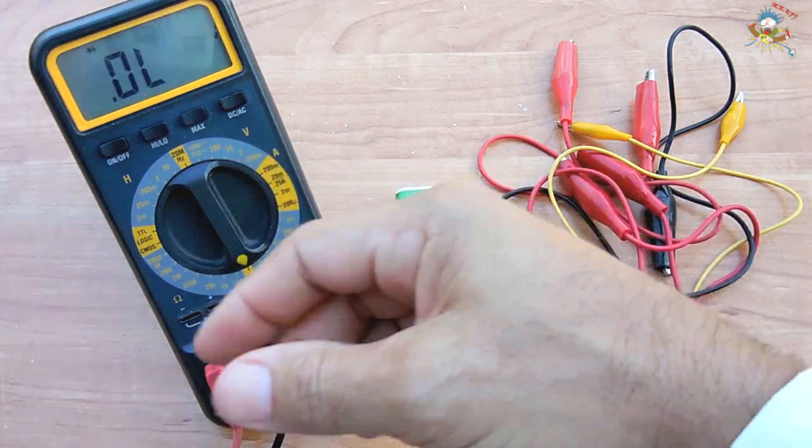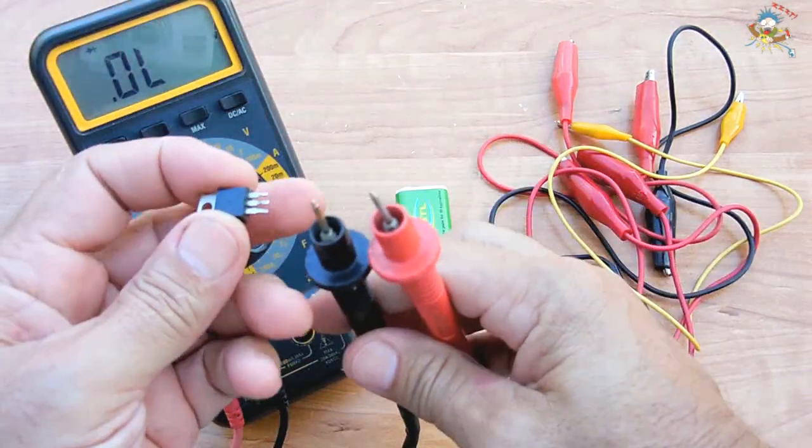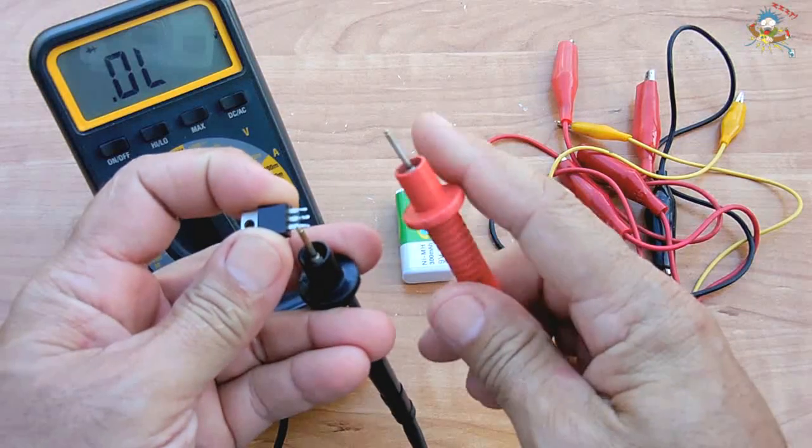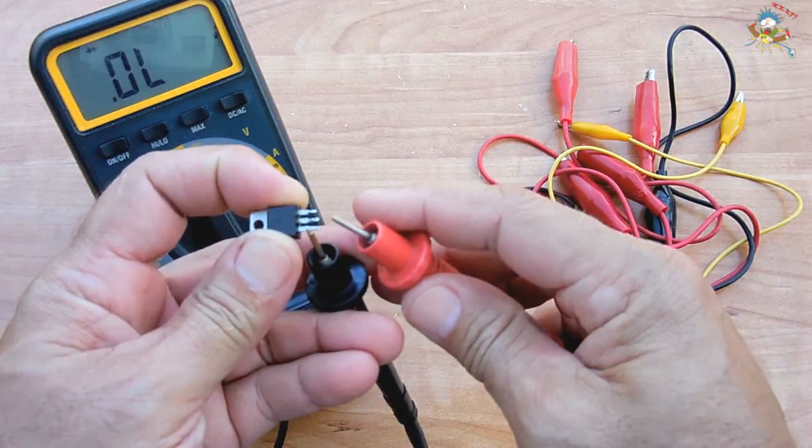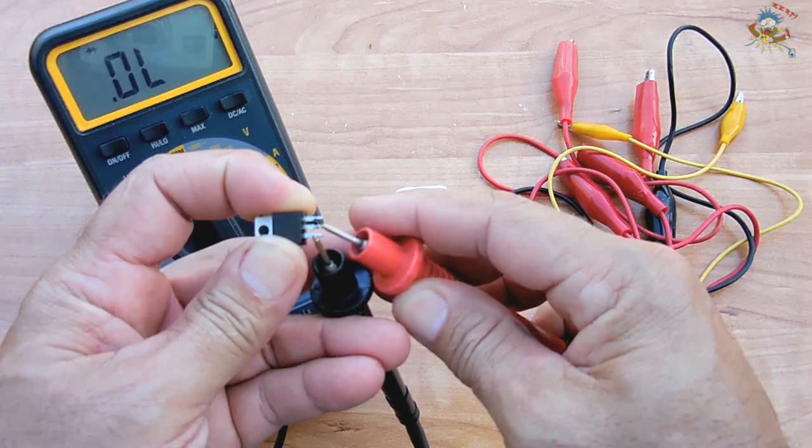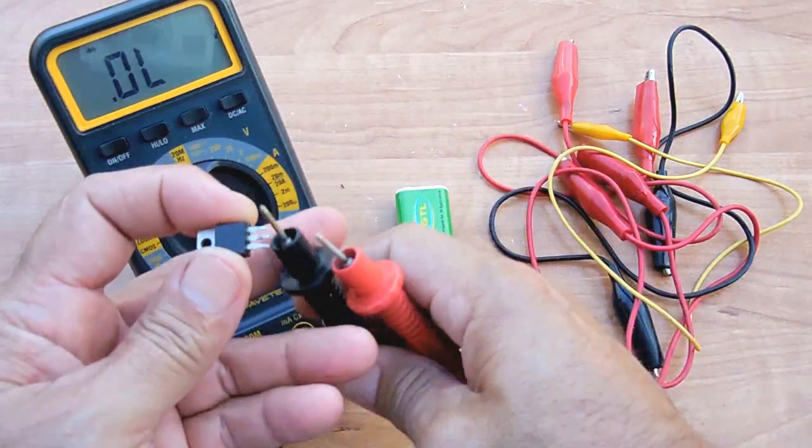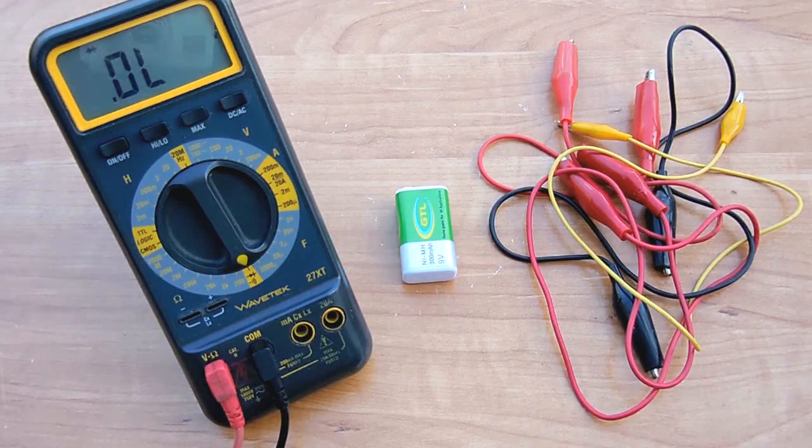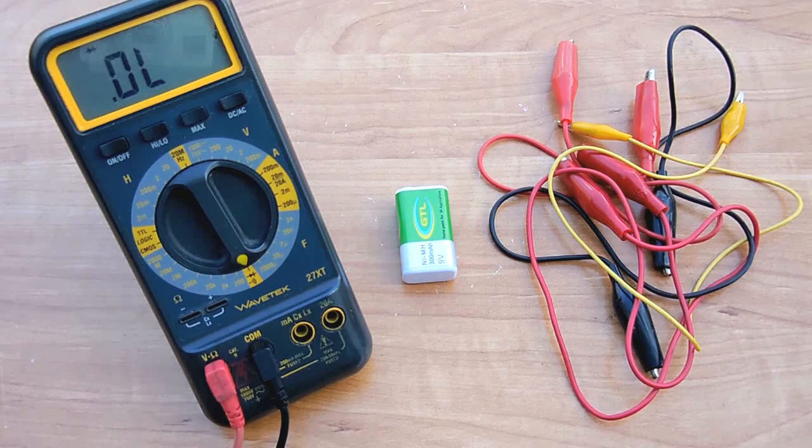When you check using the diode function, the first pin is the cathode, the middle is the anode. When I do this, nothing happens to the meter. The reason being is because the SCR is not turned on.